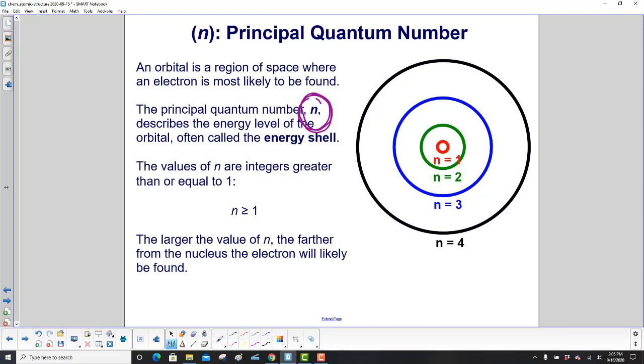The values of n are integers greater than or equal to one. The larger the value of n, the farther from the nucleus the electron will most likely be found.